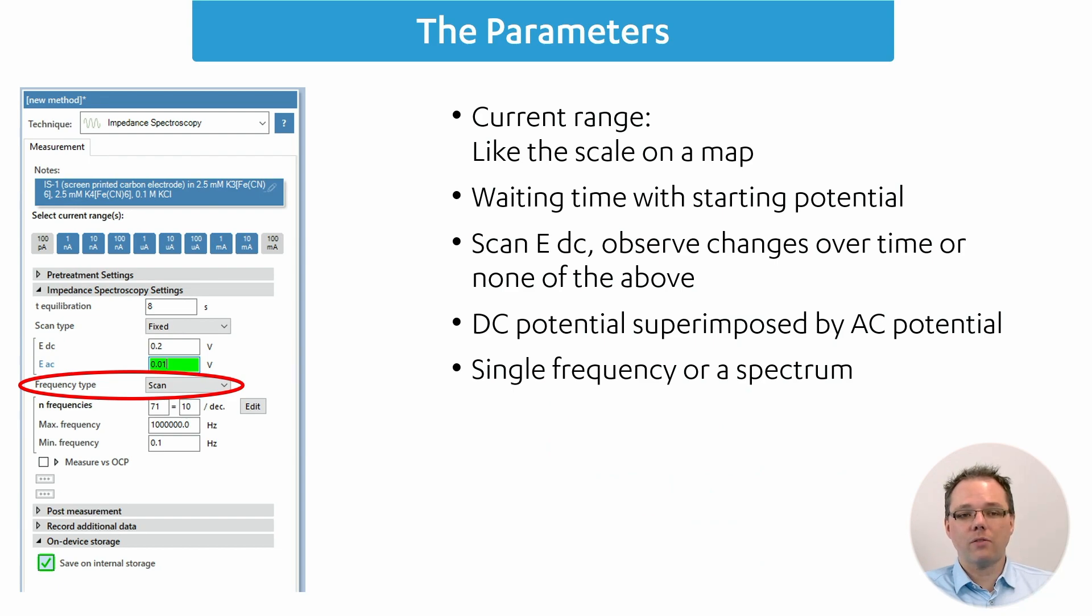Now I would like to turn to the frequency type. You can either record a spectrum and then you would have frequency type scan, or you can decide only to record at a single frequency. Maybe you just want to see how a corroding species is changing its impedance over time with a fixed single frequency.